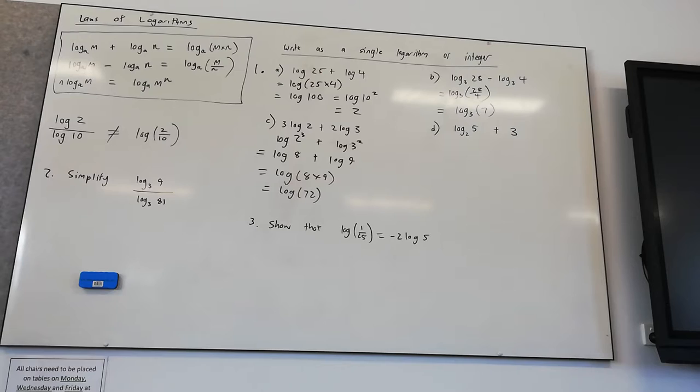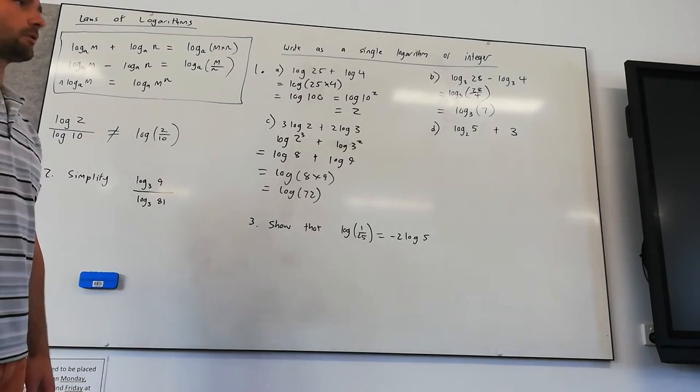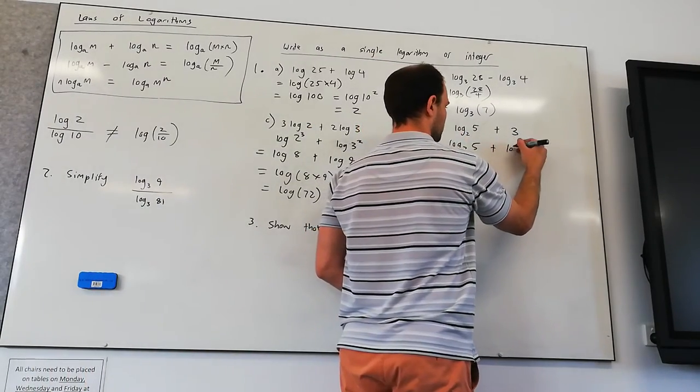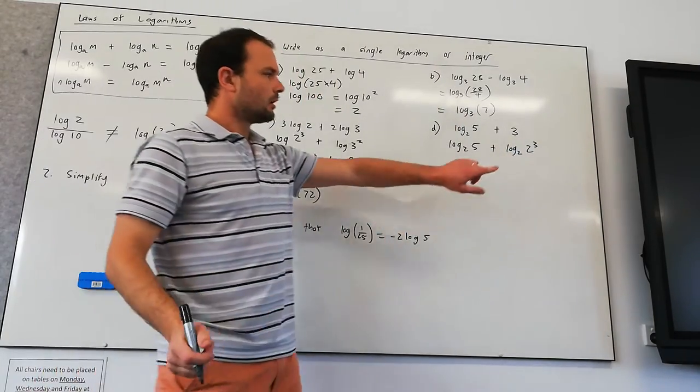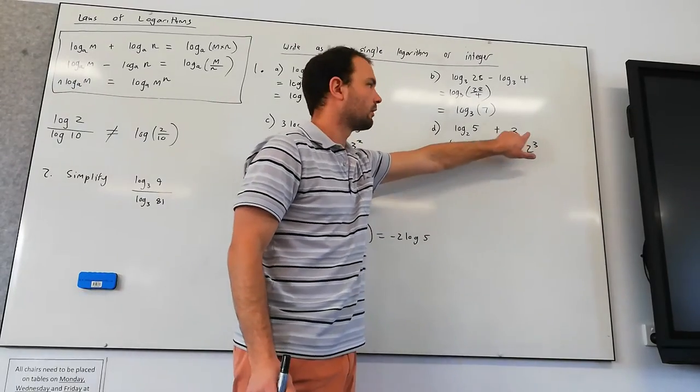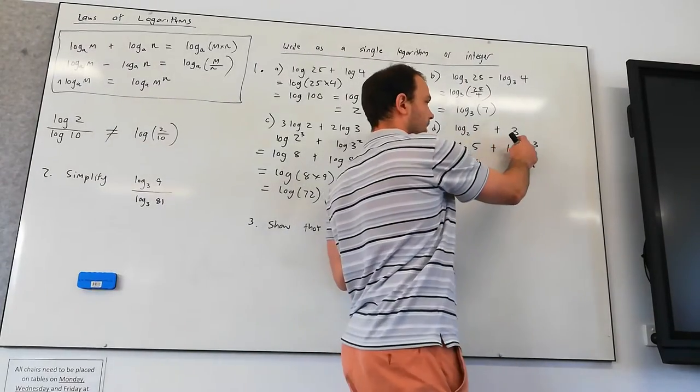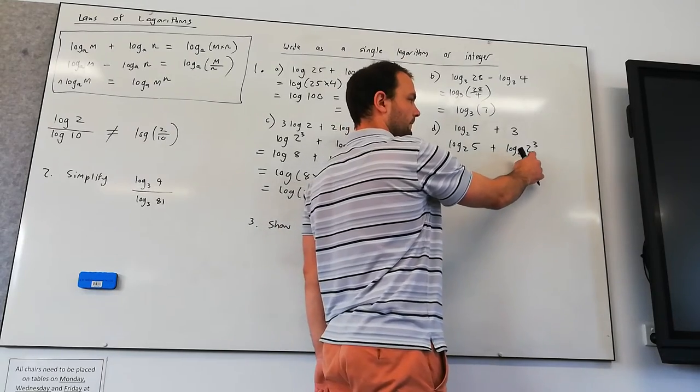Log in base 2 of 5 plus 3. It wants us to write it as a single logarithm. Now I'm going to show you the first step. I'm not going to try and explain how I get it. I'm going to show you it and then work backwards to make the connection. So this is what it is. Log in base 2 of 2 to the power of 3 equals 3. So that's one way we can express this number as a logarithm in base 2.